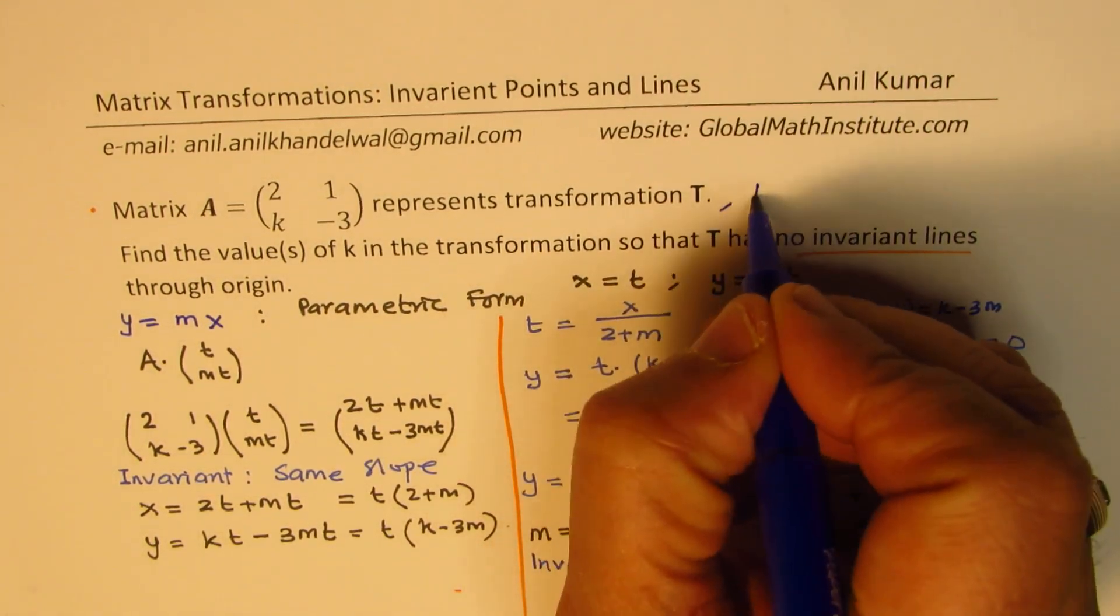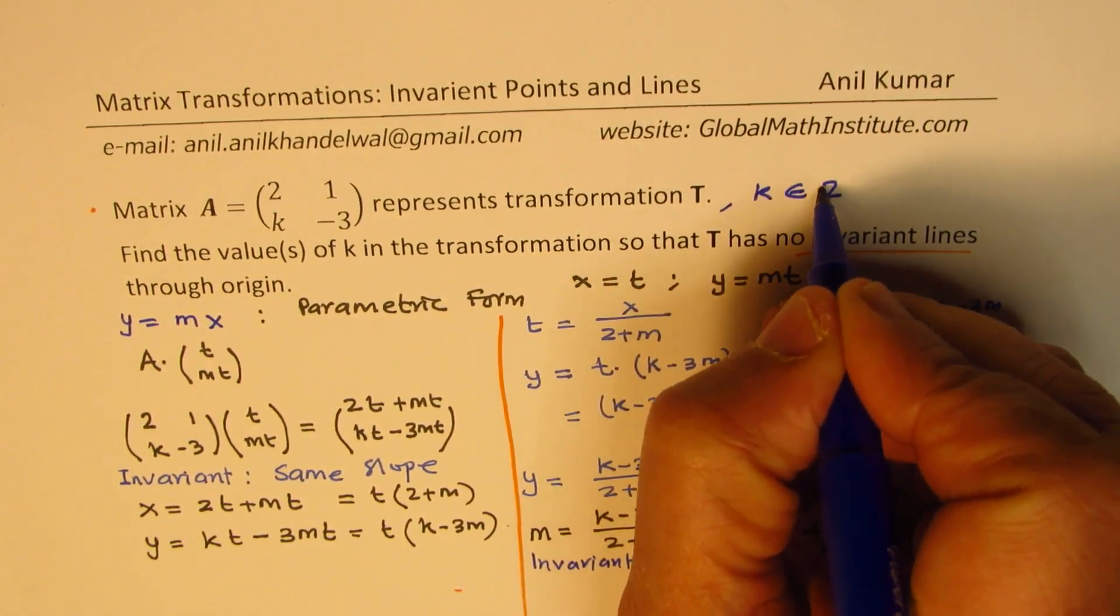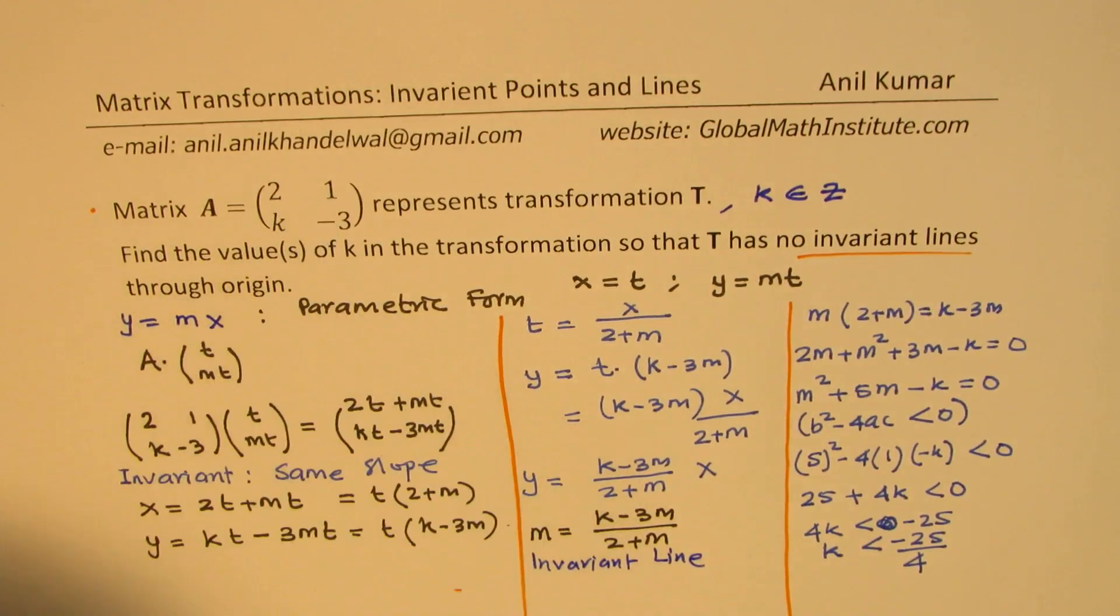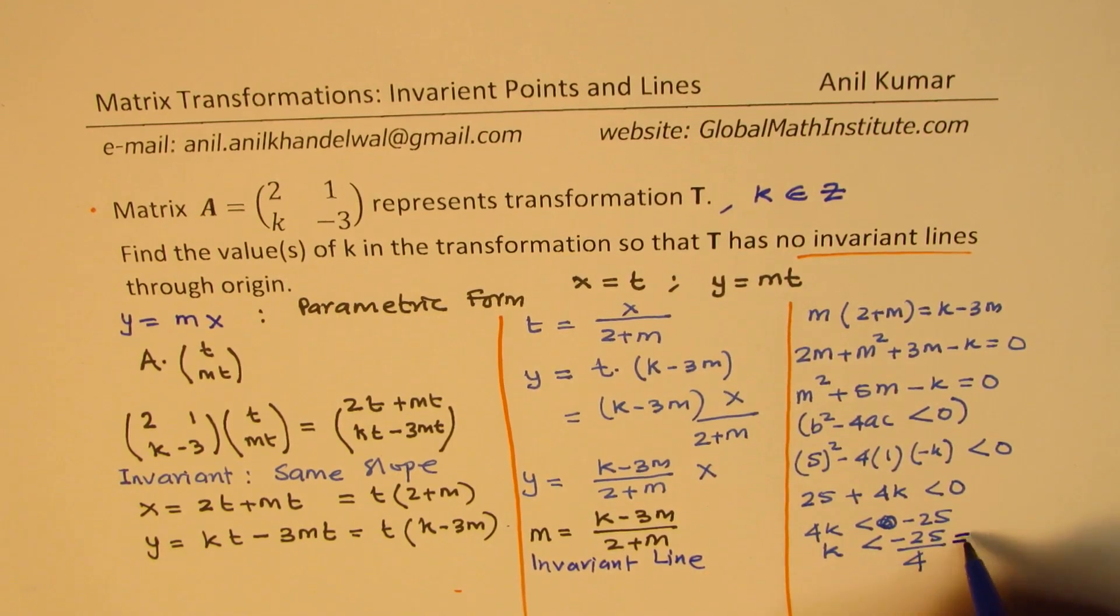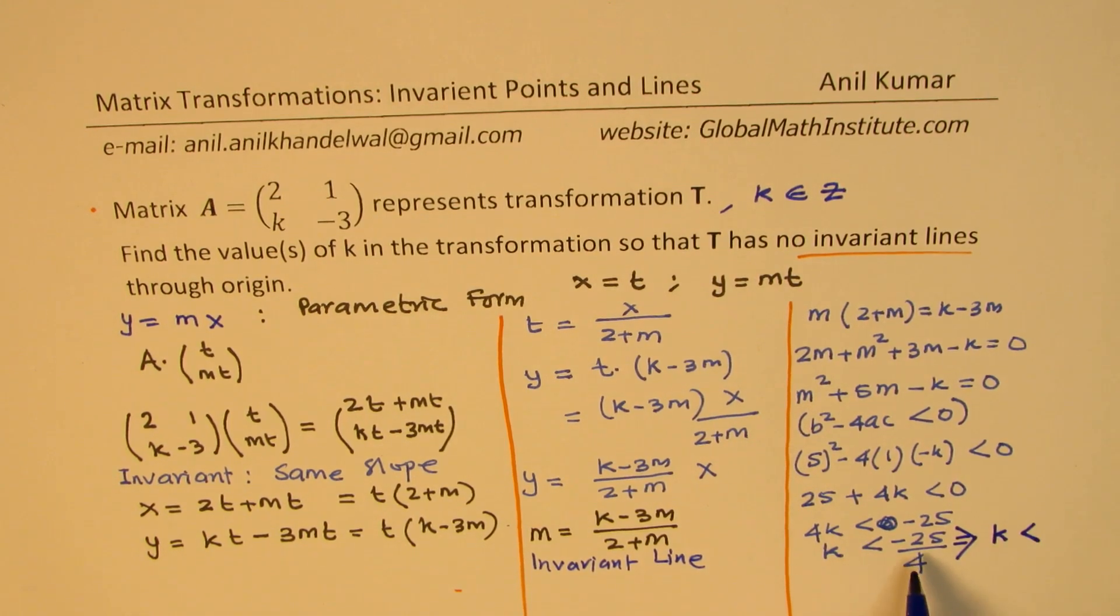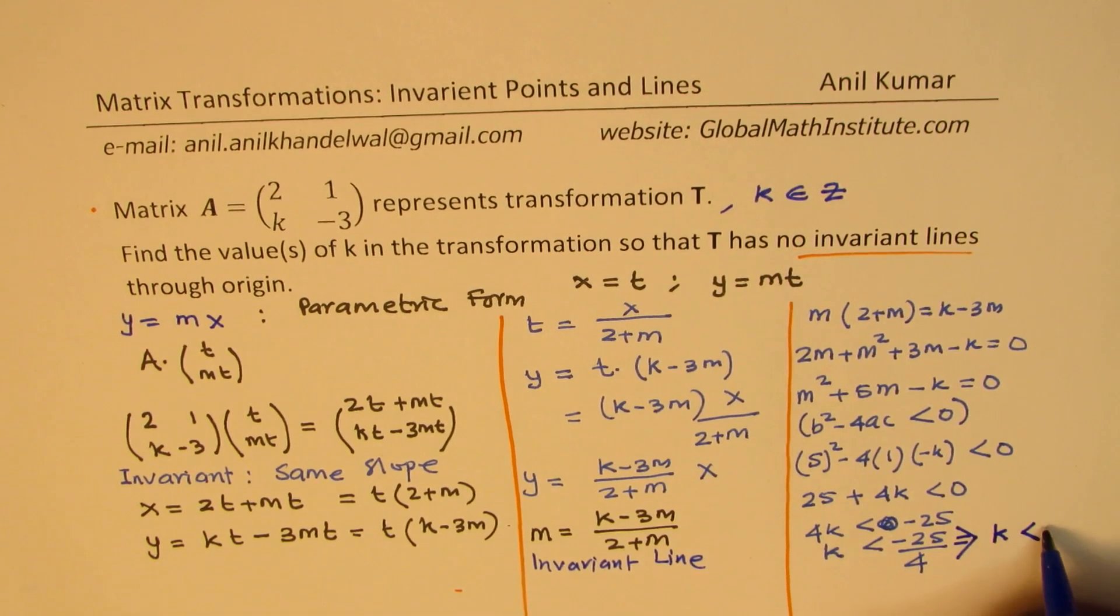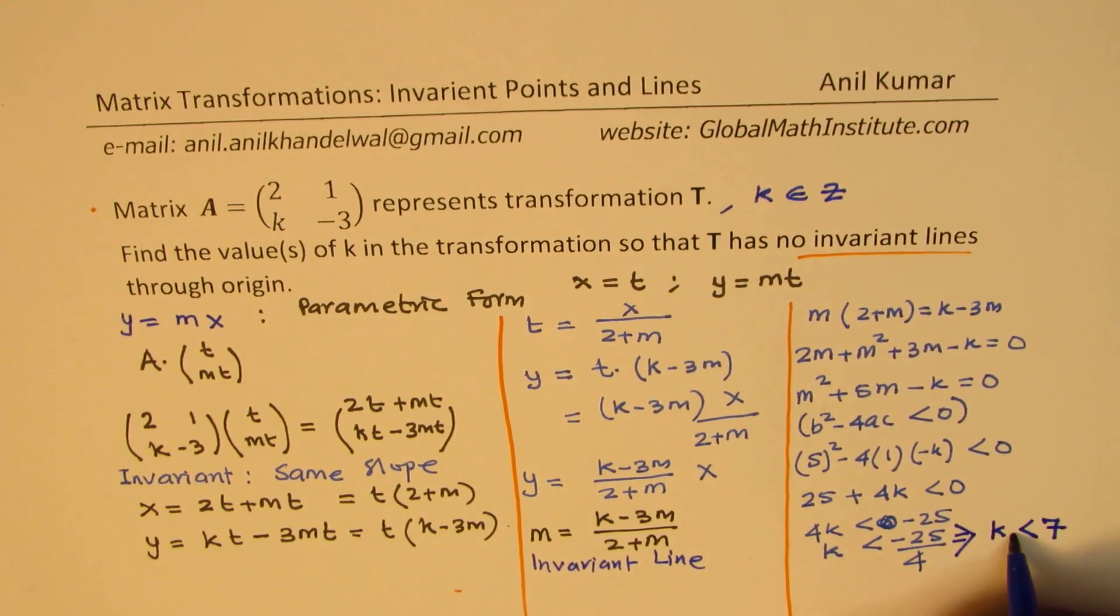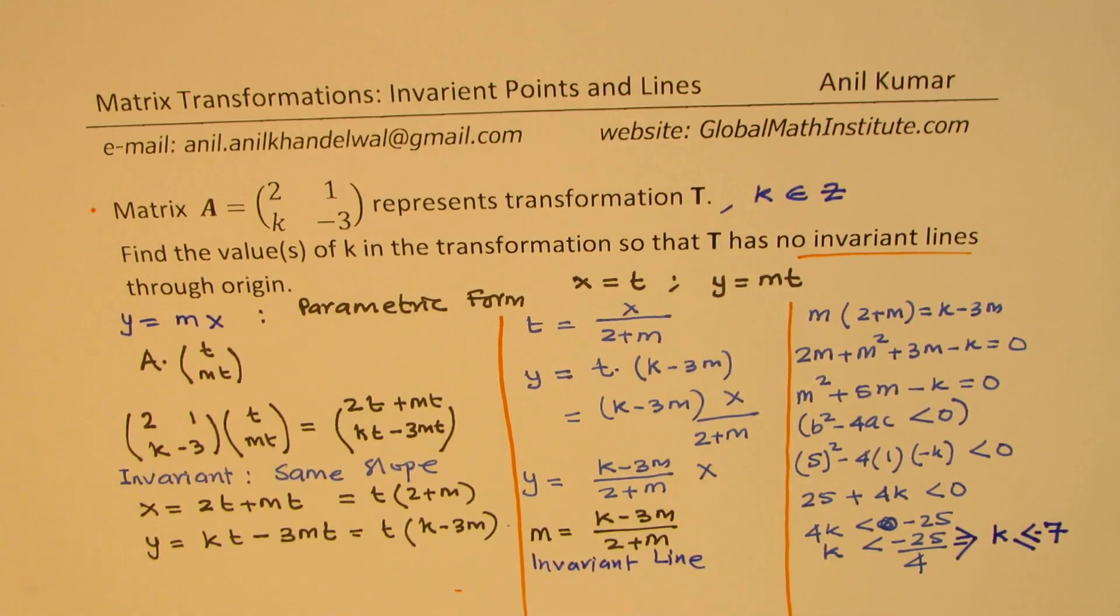So the value of k is less than minus 25 over 4, which is, you can say that the result is that k is less than, so if it is less than minus 6 point something, the integer value will be 7, less than or equal to minus 7. Does it make sense to you? So if the k value is less than or equal to minus 7, then we have no solution in this particular case.